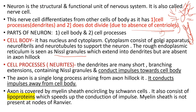The axon conducts impulses away from the cell body. The axon is covered by myelin sheath and surrounded by Schwann cells. The myelin sheath consists of lipoproteins which speed up the conduction of the impulse. Myelin sheath is not present at the Nodes of Ranvier.